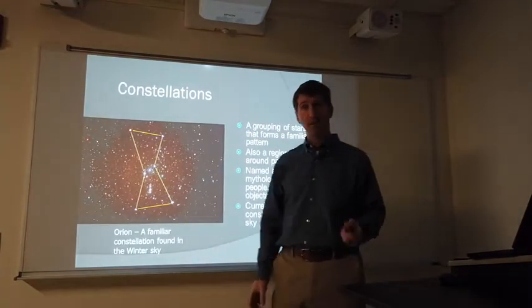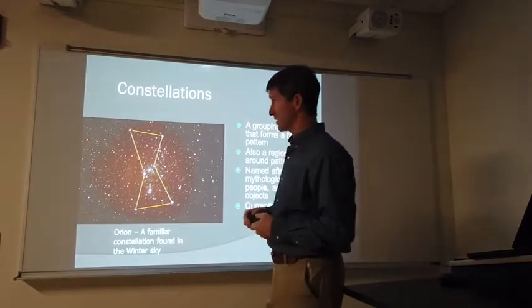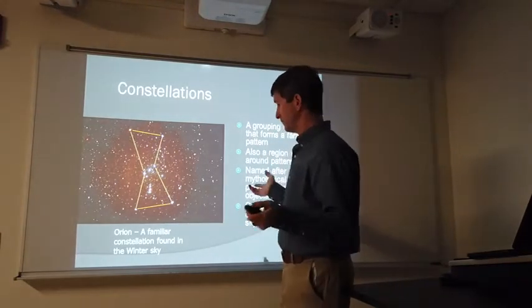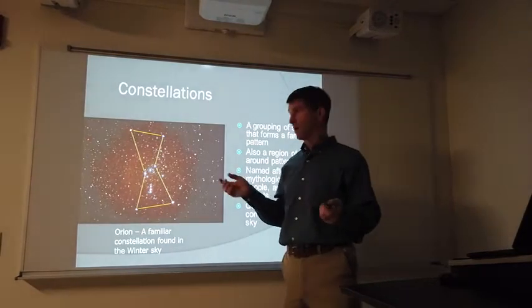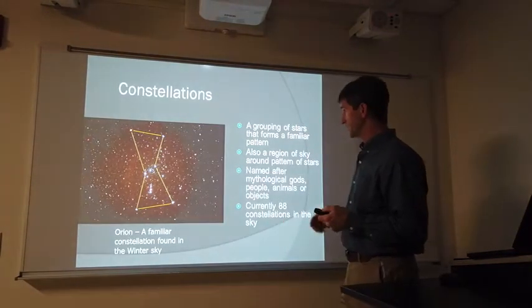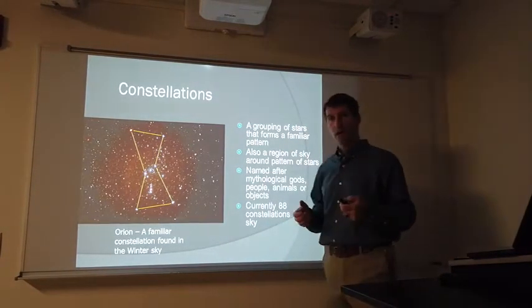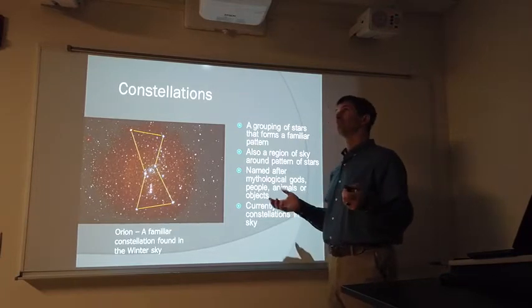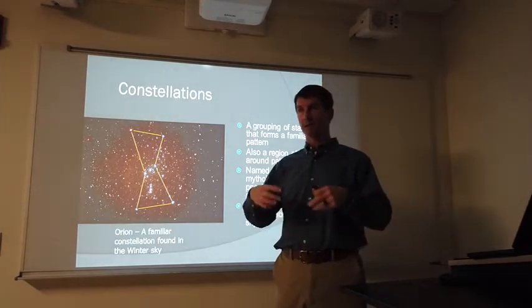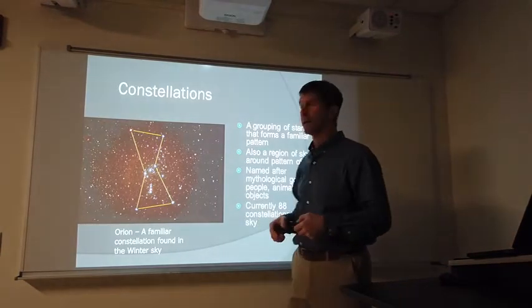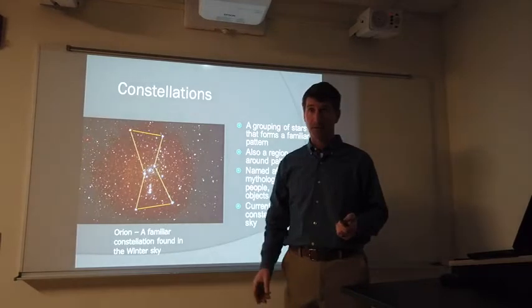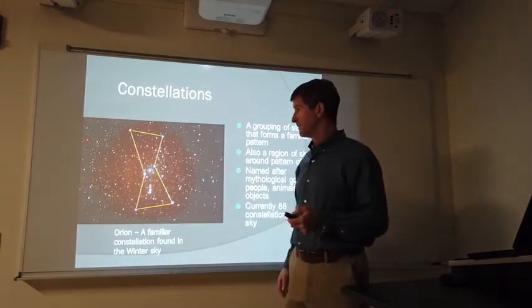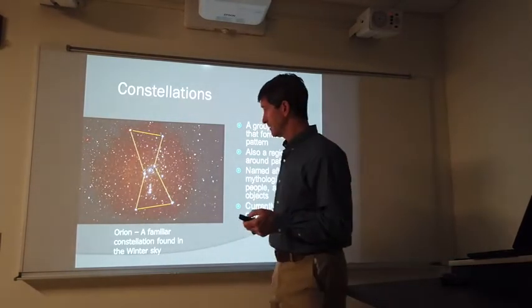So, to the ancient Egyptians, this constellation represented Osiris. To many other cultures, it represented other things. But constellations are sort of like locations in the sky, which are organized around these patterns of stars. Again, these stars aren't necessarily near one another.